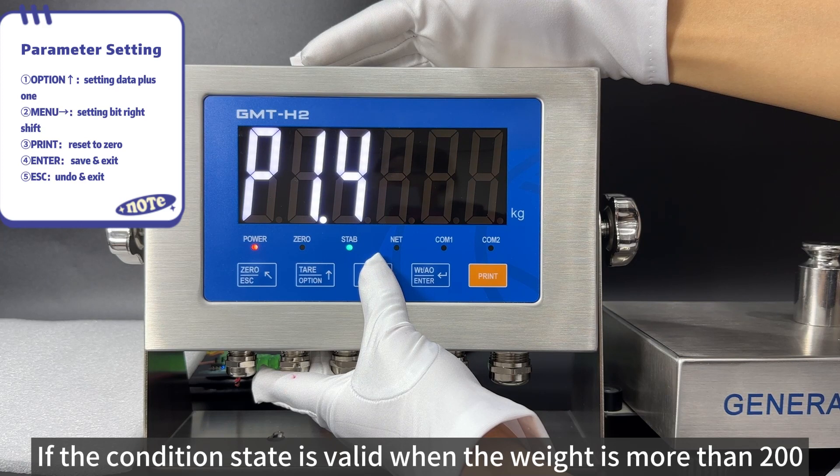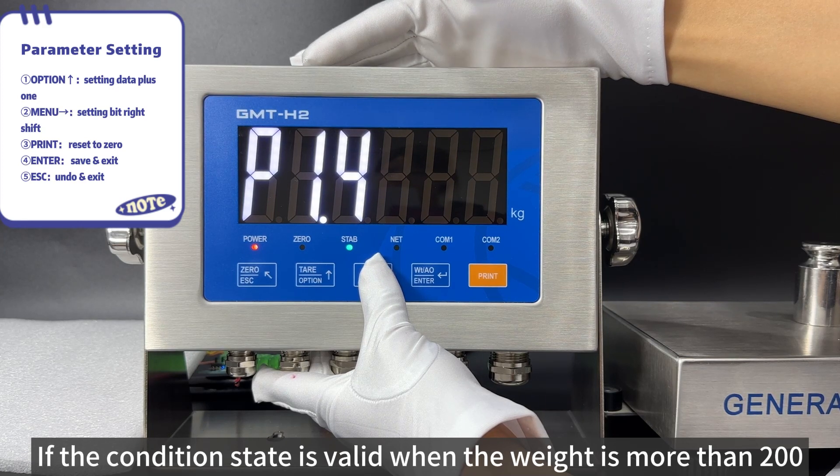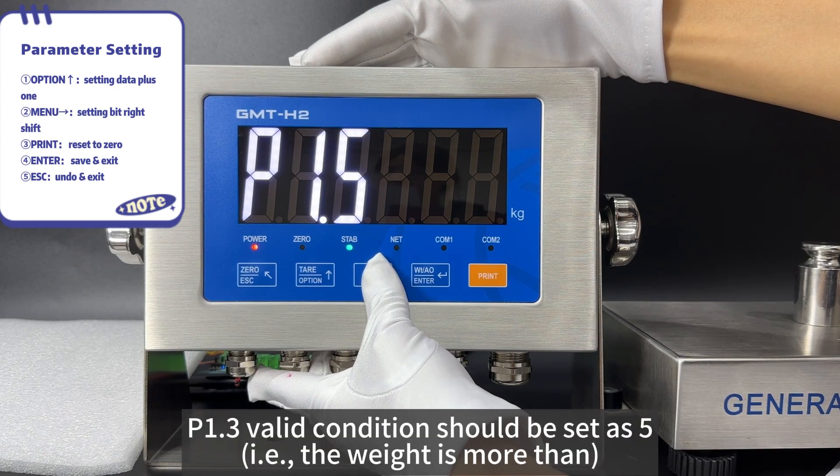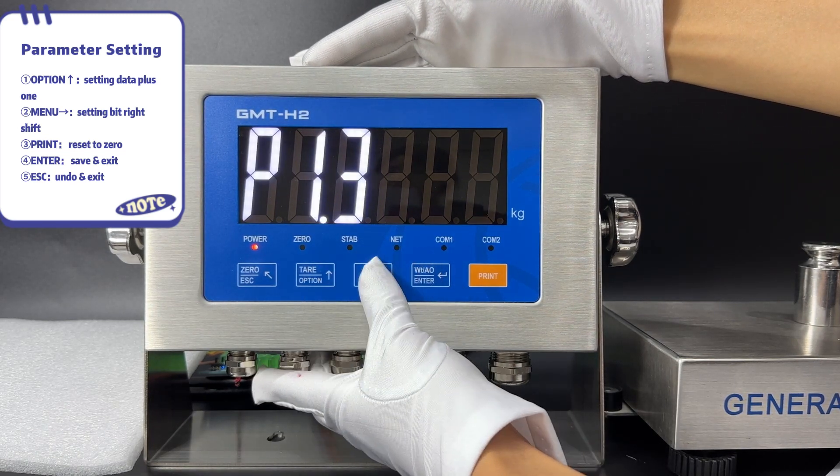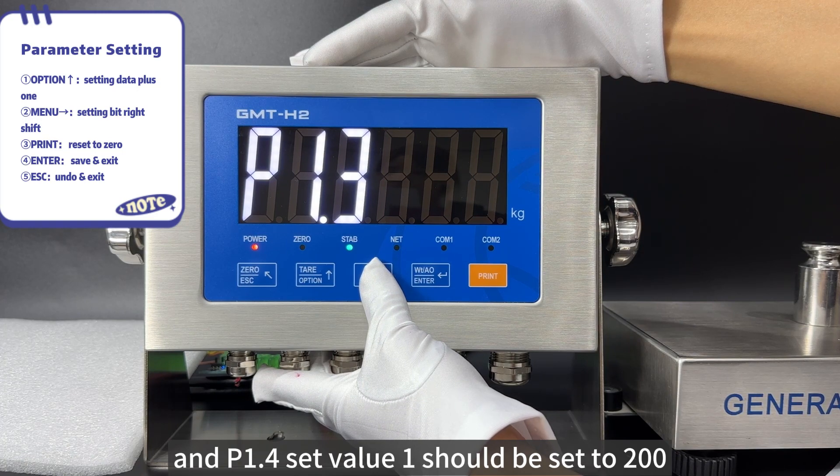If the condition state is valid when the weight is more than 200, P1.3 valid condition should be set as 5, and P1.4 set value 1 should be set to 200.